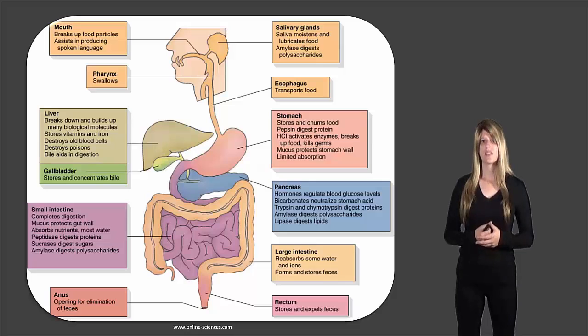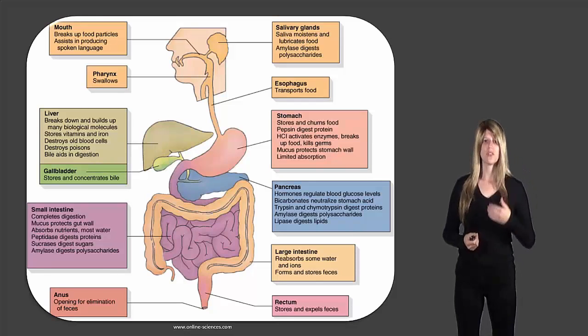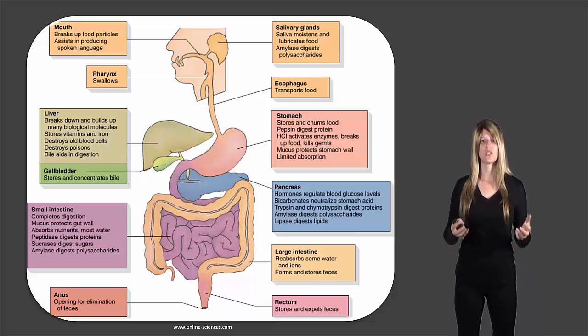So here are all the different parts of the digestive system. First we'll go through all the parts where the food travels and then we'll take a look at the accessory organs, which are organs that help digestion but food doesn't actually travel through those organs.